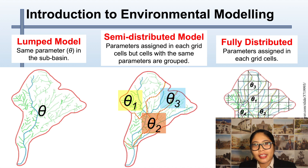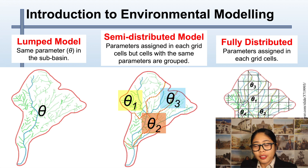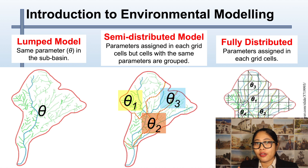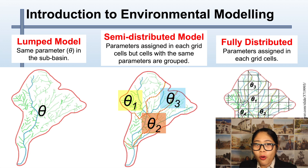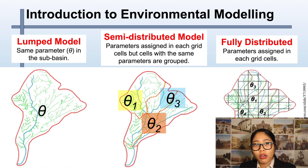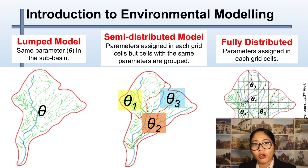The next level is the semi-distributed model. This is a variation of the lump model, sometimes called the pseudo-distributed approach. In this approach, the basin is broken down into sub-basins, and it considers one, two, or more parameters. As you can see, there are three parameters in this semi-distributed model. Semi-distributed models are usually used in run-off models or run-off maps, and sometimes used to estimate stream flows of sub-basins.